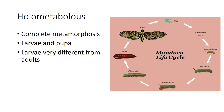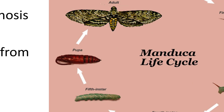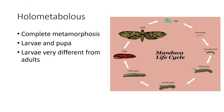Holometabolous is complete metamorphosis. There are four distinct life stages—egg, larvae, pupa, and adult. The presence of larval and pupal stages are the most notable aspects of this model. Larvae look different from adults, lack compound eyes, have reduced antennae, and lack external evidence of wing formation. The pupal stage is not a resting stage but a reorganizational stage where clusters of dormant cells are activated. Since the wings develop internally, they are called endopterygotes. The photo shows the life cycle of the tobacco hornworm, with eggs, five larval instars, a pupa that burrows into the soil, and then the adult moth.